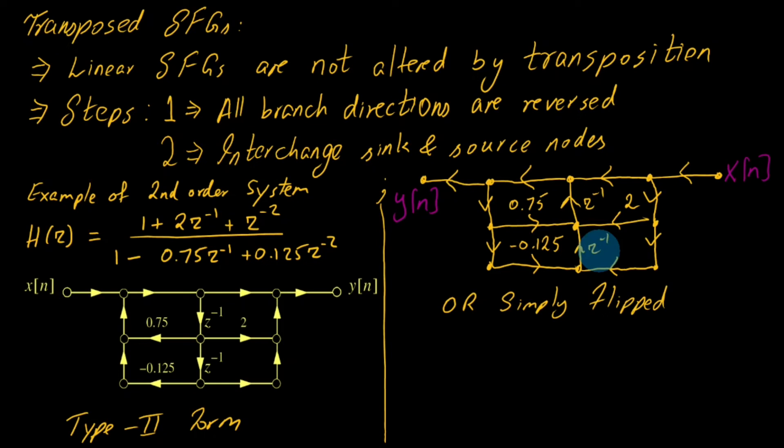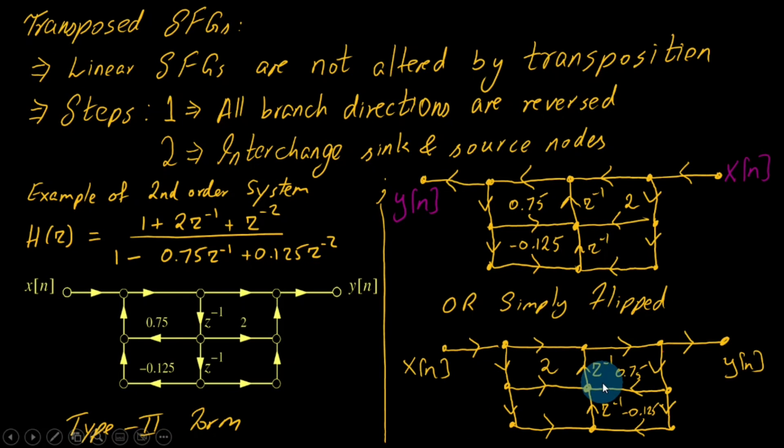By flipping, we don't change anything—just flip it. We input towards the left side and output towards the right side, which is a standard way of writing. This is the final signal flow graph with x(n) coming from here, and the direction is towards the right.